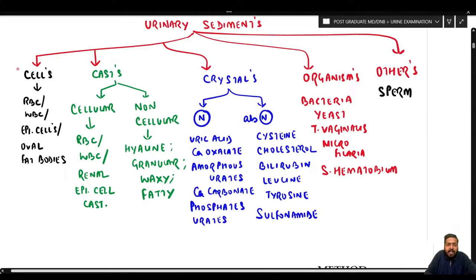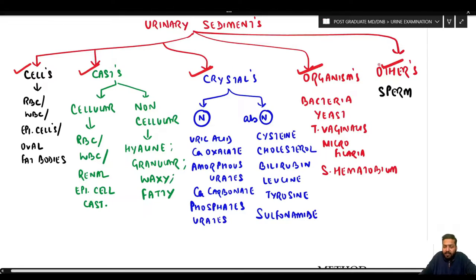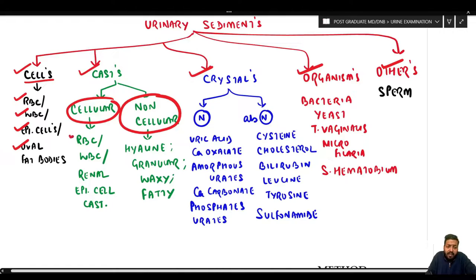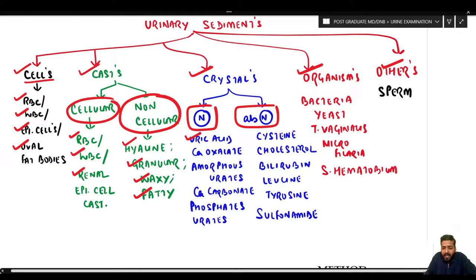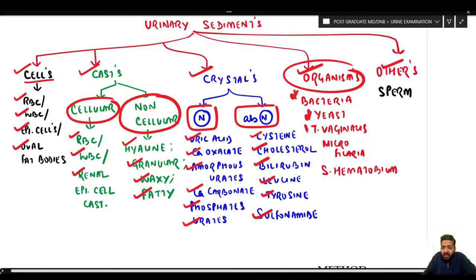Urinary sediments include cells, casts, crystals, organisms, and other elements. Cells include RBCs, WBCs, epithelial cells, and oval fat bodies. Casts are either cellular (RBC cast, WBC cast, renal epithelial cell cast) or non-cellular (hyaline, granular, waxy, fatty). Normal crystals include uric acid, calcium oxalate, amorphous urates, calcium carbonate phosphates, and ammonium urates. Abnormal crystals include cystine, cholesterol, bilirubin, leucine, tyrosine, and sulfonamide crystals. Organisms include bacteria, yeast, Trichomonas vaginalis, microfilaria, and Schistosoma haematobium.